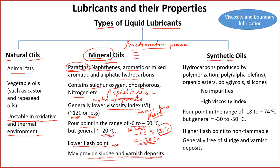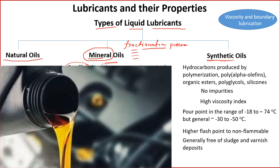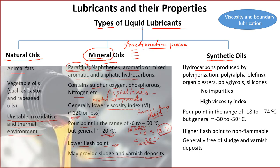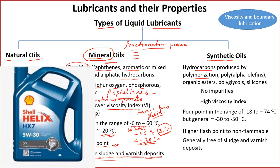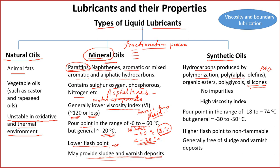Next is synthetic oils. As the name suggests, synthetic means it has been made — not obtained naturally. We take raw materials and conduct chemical processes such as polymerization to create these hydrocarbons. Well-known synthetic oils include poly-alpha-olefins (PAO), organic esters, polyglycols, and silicone fluids. These were created to overcome the problems of mineral oils: low viscosity index, high pour point, and low flash point.